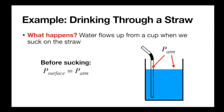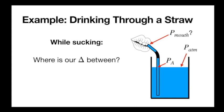Now we put a straw there. Before we do anything, the scenario looks the same: atmospheric pressure at the surface of the water is true outside and inside the straw. We've implemented this boundary but haven't changed anything about the pressure. The same is true at the top of the straw. There is a height difference between the bottom and the top, but our assumption is that air is so thin that small changes in height don't really affect our change in pressure the way they would with water. So atmospheric pressure everywhere.